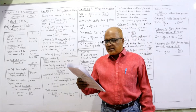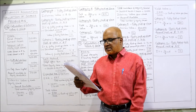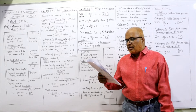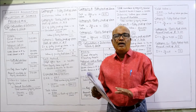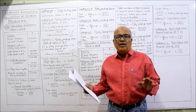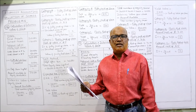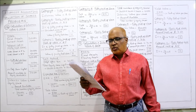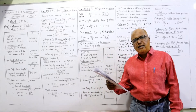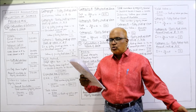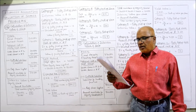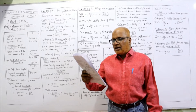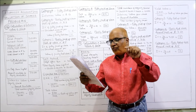On the asset side: non-current assets — tangible fixed assets 2 lakh; other non-current assets — preliminary expenses 10,000, which we ignore as it is a fictitious asset. So only the tangible assets of 2 lakh are considered. Current assets 1 lakh 30,000. Total of the balance sheet 3 lakh 40,000. Now see the share capital carefully — this is the new point.